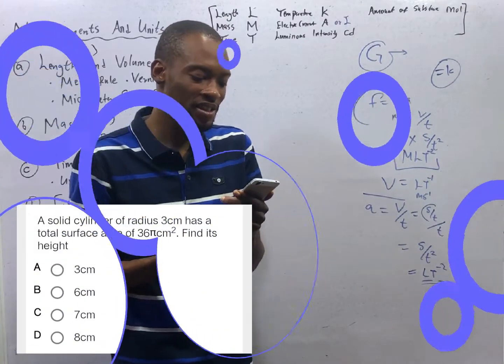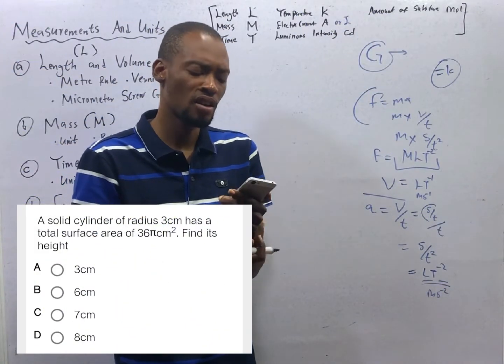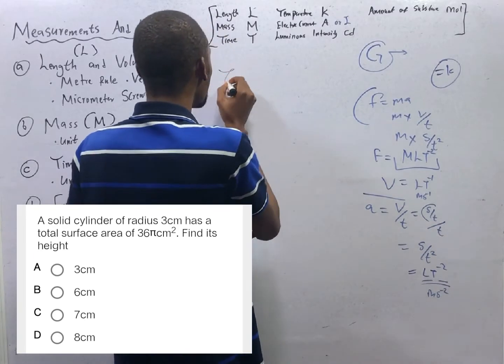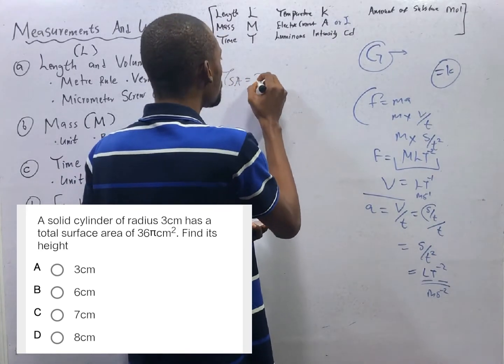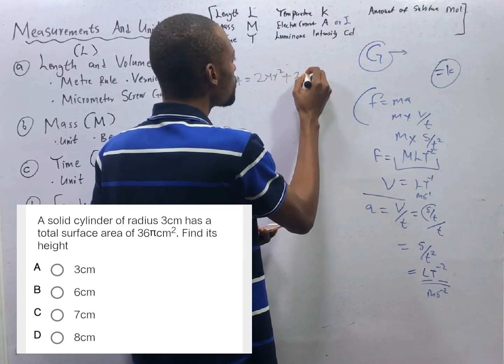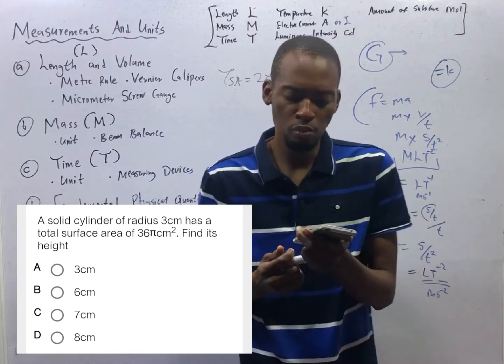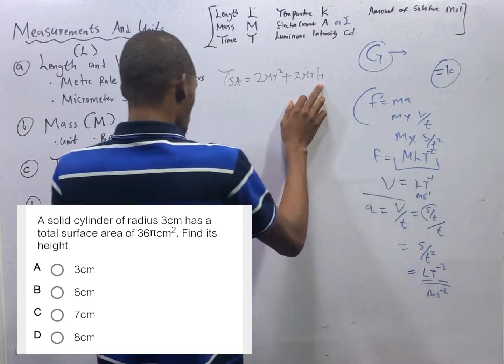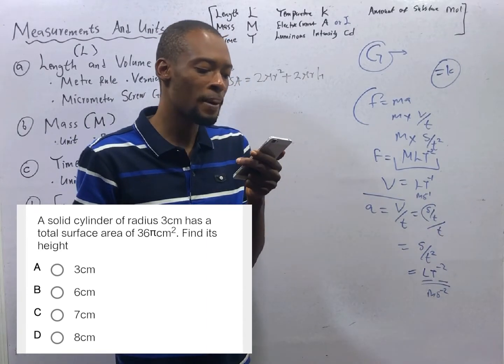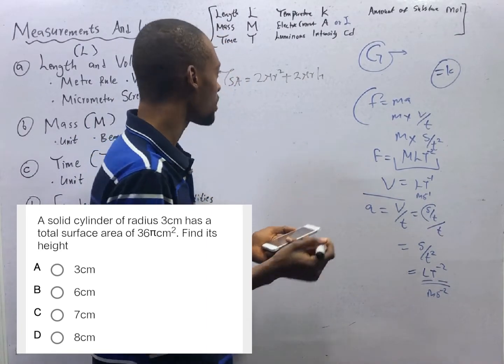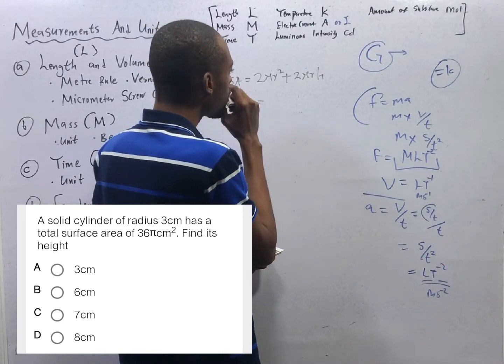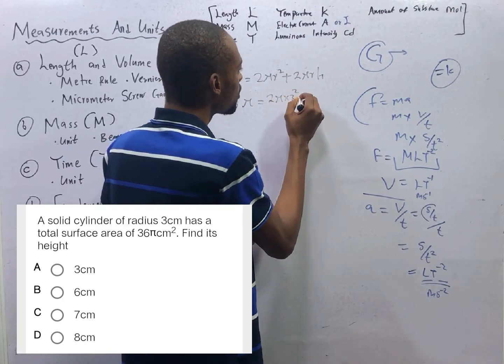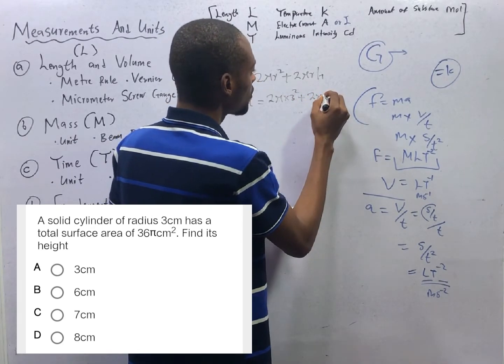A solid cylinder of radius 3 cm has a total surface area of 36 pi cm square. Find its height. The total surface area of a cylinder TSA is equal to 2 pi r square plus 2 pi r h. That is the total surface area of a cylinder. Now this is the height. We are given the total surface area to be 36 pi cm squared.